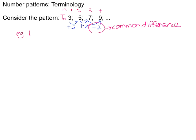For example, if I asked you what is T3, that means I'm looking for the value of the term in the third position. So position 1, position 2, position 3 — the value of the third term is 7.